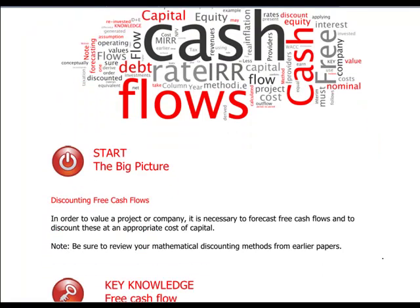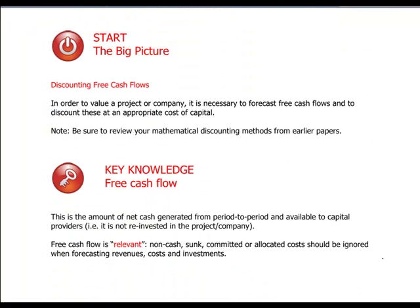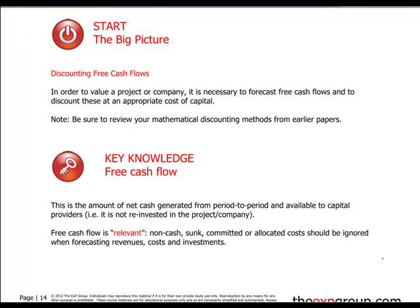A lot of it actually does come from paper F9, so F9 is assumed knowledge. The whole mathematical task of discounting cash flows should be well familiar to everybody. The concept of measuring free cash flows — these would be cash flows generated from period to period for, or destined for, the capital providers. Capital providers, we understand, to be both debt and equity.